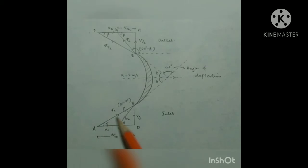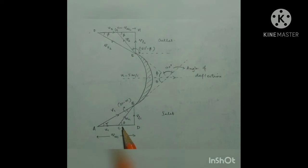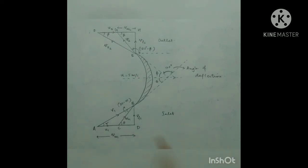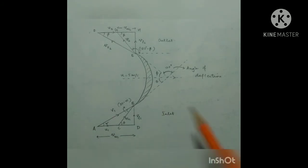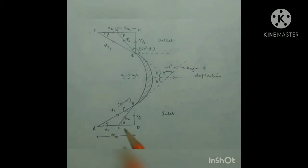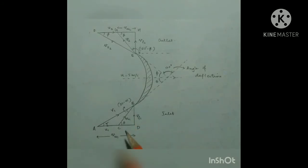At the inlet, we have V1 which is the velocity of the jet, U1 which is the velocity of the curved vane, and Vr1 which is the relative velocity of vane and jet at the inlet. V1 has both horizontal and vertical components: Vw1 is the horizontal component and Vf1 is the vertical component. Alpha is the angle between the velocity of the jet and the horizontal — also called the guide blade angle — and theta is the angle between the relative velocity and the horizontal.